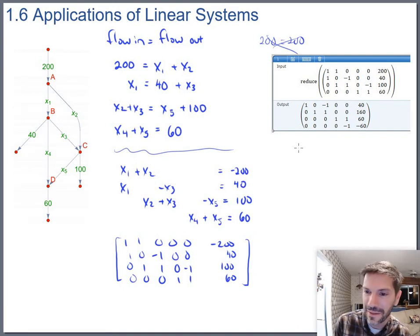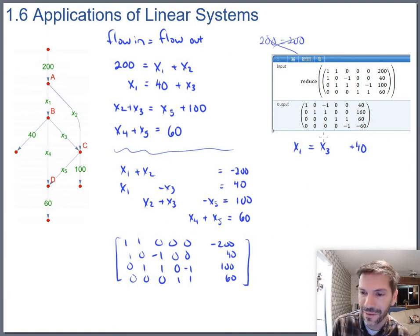So the reduced system here, just translate that back into x's and equal signs. So the first row, let's say x1, I'm going to go ahead and move the x3 to the other side. So x1 equals x3 plus 40. And I'm noticing there's two free variables here. There's pivots in x1, x2, and x4. Yeah, let's keep going. We'll see why I'm writing x3 in a little space before the constants.